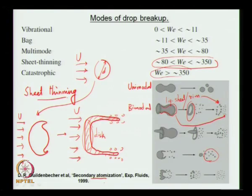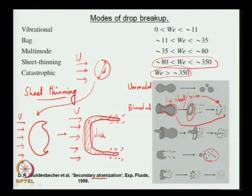The last breakup process is called catastrophic breakup, which occurs when the Weber number is greater than about 300. This is very difficult to investigate and there is not much information available. In fact, the word 'catastrophic' is a descriptor of nothing more than lack of information about this regime. There is some experimental evidence of drop sizes formed, but the specific physics at this high Weber number is not completely understood.